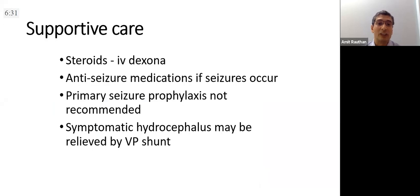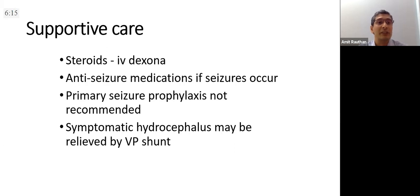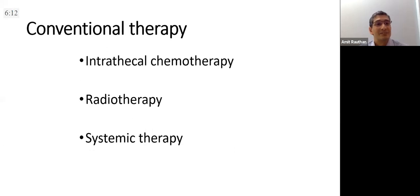A word on supportive care: steroids form the backbone of treatment — always start them but taper as soon as you can. Anti-seizure medicines are not given prophylactically, only if seizures develop. Some patients with symptomatic hydrocephalus may actually need a VP shunt to relieve pressure. Conventionally the treatment modalities discussed include intrathecal chemotherapy, radiation, and systemic therapy.